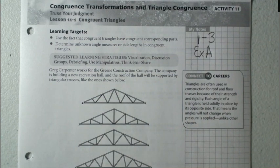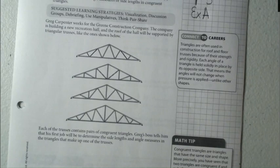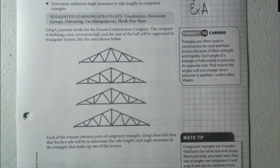Let's go ahead and take a look at the intro together. The intro says Greg Carpenter works for the Green Construction Company. The company is building a new recreation hall, and the roof of the hall will be supported by triangular trusses, like the ones shown below.